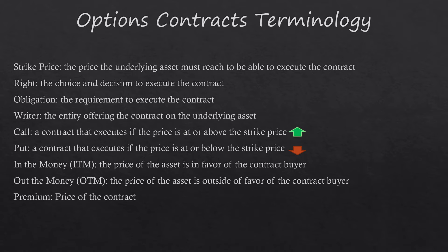Strike price — this is the price the underlying asset must reach in order to execute the contract. As discussed in the definition of an options contract, the strike price is the price that's agreed upon for the stock — it's where you expect to meet.